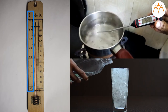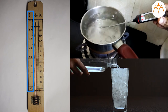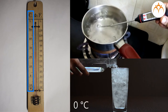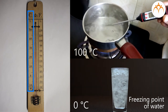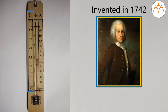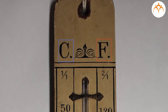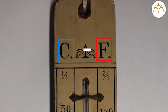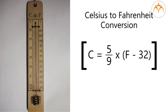The Celsius temperature scale, also called the centigrade temperature scale, is based on 0 for the freezing point of water and 100 for the boiling point of water. Invented in 1742 by Swedish astronomer Anders Celsius, it is sometimes called the centigrade scale because of the 100-degree interval between the defined points. The formula to convert from Fahrenheit to Celsius is: C = (5 / 9) × (F − 32).